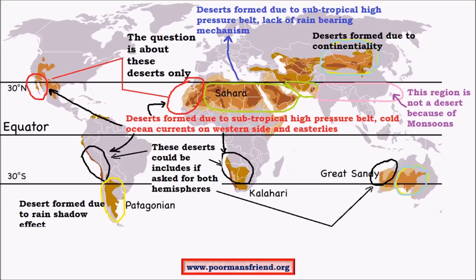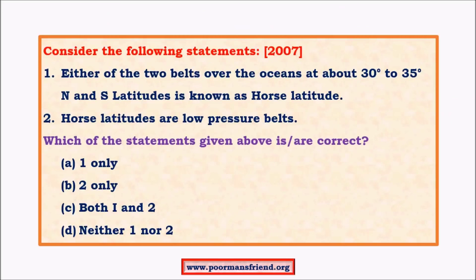Desert formation is due to subtropical high pressure belts where dry air subsides, and due to offshore winds devoid of moisture. However, India and parts of Indochina lie along the same belt but are not deserts because of monsoons — a different climatological phenomenon that brings rain to these regions. Regarding a practice question: subtropical high pressure belts are called horse latitudes, present between 25 to 35 degrees north and south — this is correct. However, horse latitudes are high pressure belts, not low pressure belts — so that statement is wrong.